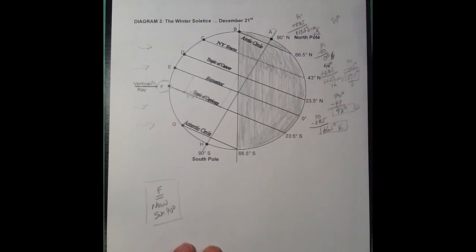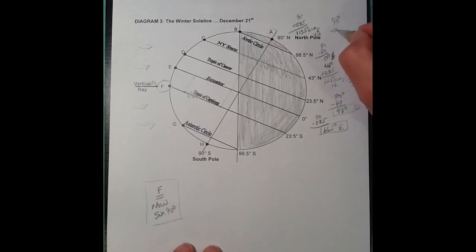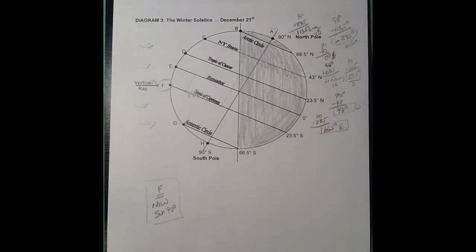90, which is the noon sun position at the vertical ray. 90 minus 113.5 would give me minus 23.5 degrees, or you could say no sun for the point A, which is at the North Pole.